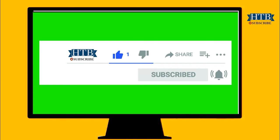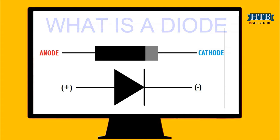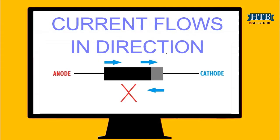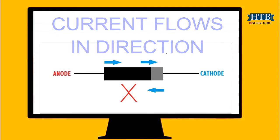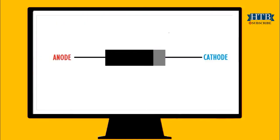What is a diode? A diode is a two-terminal electronic component that allows the flow of current primarily in one direction. Diodes come in different sizes and shapes. A diode is marked with two different colors to distinguish the anode and the cathode.